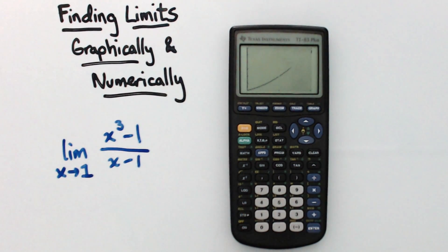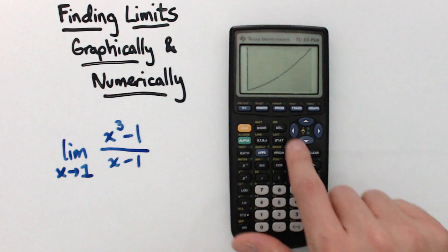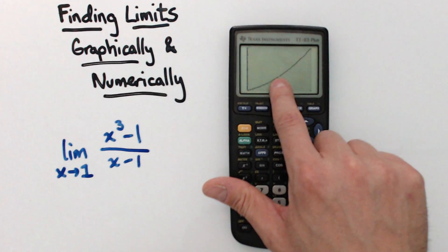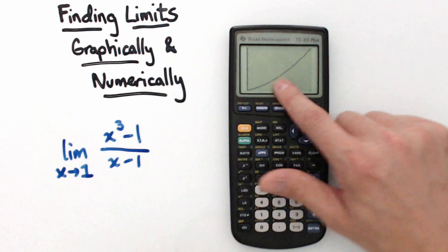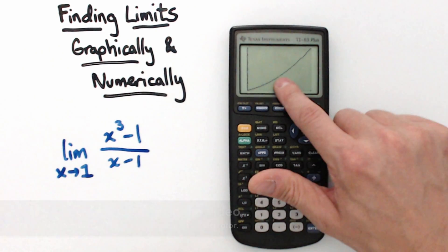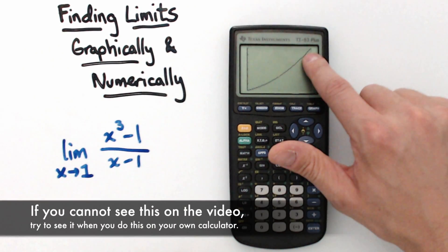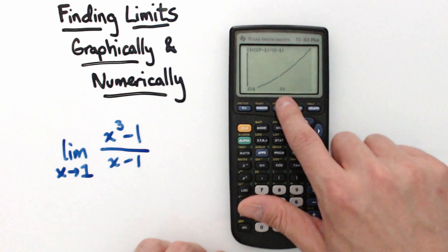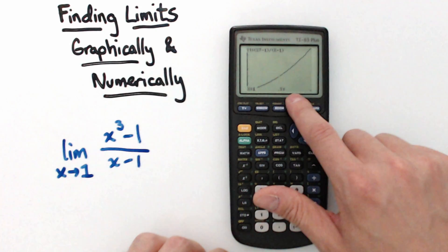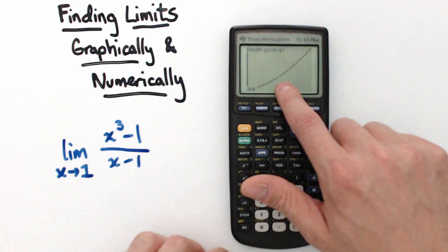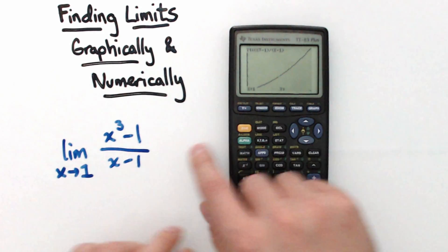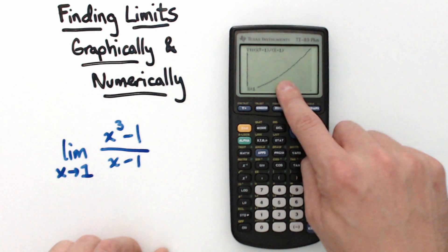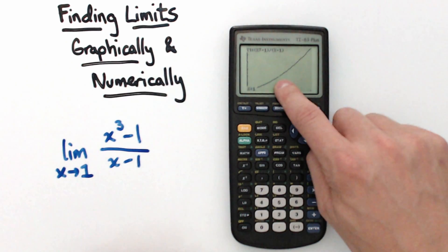The graph looks like a line, and at x = 1 you can see a little hole — the line skips right at 1 and then continues. If you hit Trace and type 1 and Enter, no y-value shows up at all. That's supposed to happen: if you plug 1 into this function, you get 0 over 0, which doesn't exist, so it shouldn't appear on the graph.